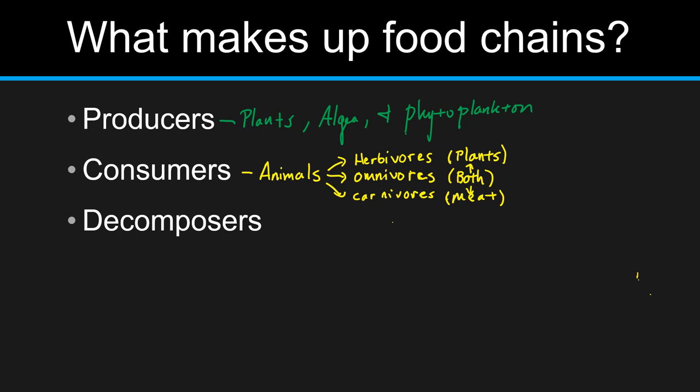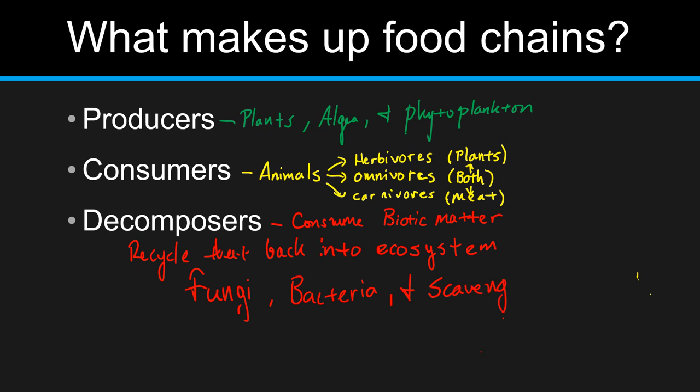Then we have decomposers. These are going to consume biotic matter, specifically dead biotic matter, and they're going to recycle that matter back into the ecosystem. Examples of decomposers are fungus, bacteria, and scavengers.